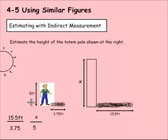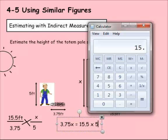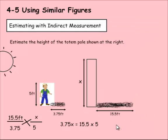So now I can use cross products to solve. 15.5 times 5 equals 3.75X. So 3.75X equals 15.5 times 5. 15.5 times 5 equals 77.5.